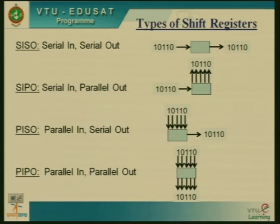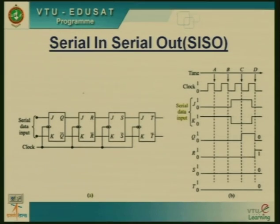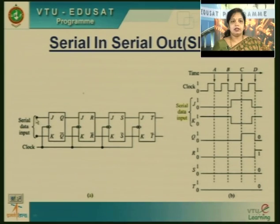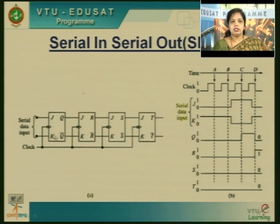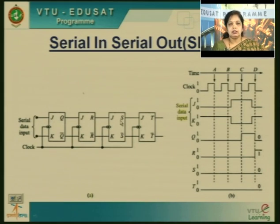Let us discuss the internal circuit diagram for serial in, serial out. This shift register can be built using JK, SR, or D flip-flops. Here we use JK flip-flops — I am using 4 flip-flops, each storing 1 bit, so 4 flip-flops store 4 bits total. The clock uses negative edge triggering. The first flip-flop's output is connected as input to the second, the second to the third, and the third to the fourth — this is how they are serially connected.